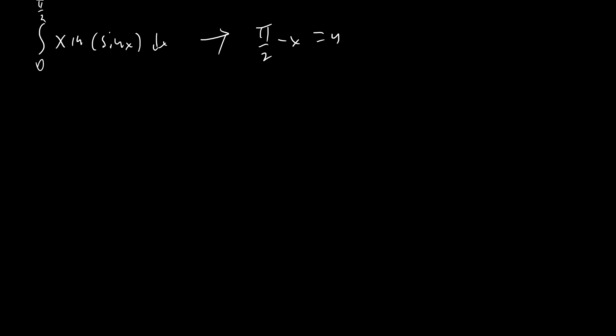So let's go ahead and substitute in the definition of sin(x). The great part about this is we know that everything is positive on this interval, which means that the natural logarithm here is going to be a real value. So we know that we can just get rid of anything that's imaginary in our integrand. We're going to expand out the 1/i as a natural logarithm, and also the ln 2.